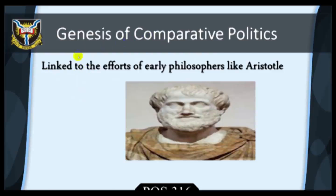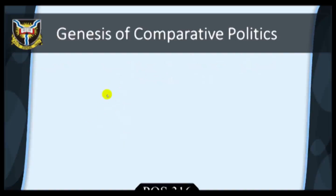For ease of reference, we may link the genesis of comparative politics to the efforts of early philosophers like Aristotle who, for instance, collected information about a large number of diverse constitutions and used them to explain the workings and operations of different types of governments and political systems more than 2,000 years ago.